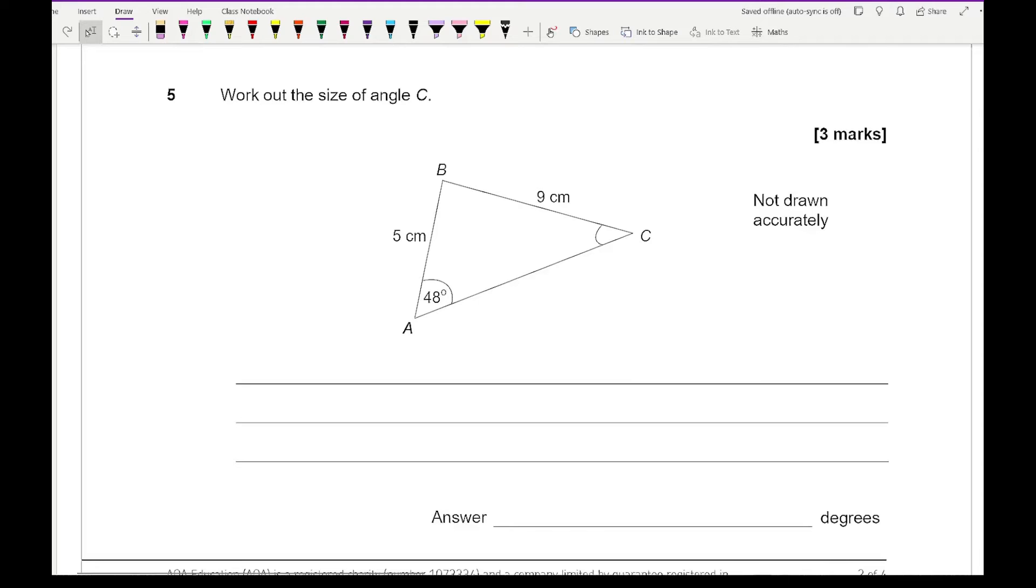Now for question 5 it says work out the size of angle c so again we start by labeling our angle so this is going to be c, that's going to be little c, that's going to be a and that's going to be little a. Now if you want to label them a b c in terms of other letters that's absolutely fine but what you should have when you substitute those values in is you should have 5 over sine c equals 9 over sine 48. And from this all we're going to do is just do some rearranging so here I've got 9 sine c equals 5 sine 48.